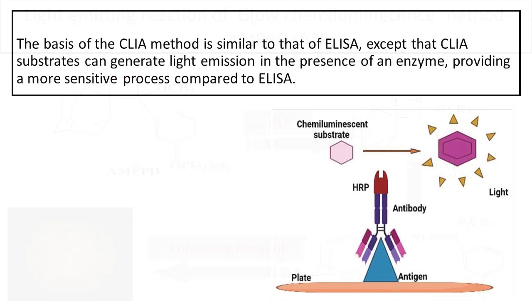The basis of the chemiluminescence method is similar to that of ELISA, except that chemiluminescence substrates can generate light emission in the presence of an enzyme, providing a more sensitive process compared to ELISA.